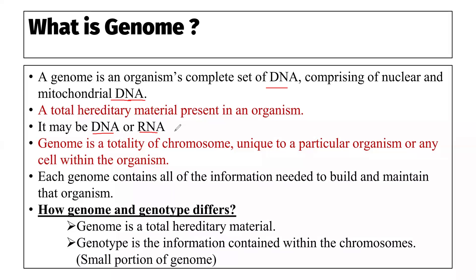The genome is also the totality of chromosomes. Different organisms have different numbers of chromosomes. For example, in human beings we have 46 chromosomes, in chimpanzees there are 48 chromosomes, and in Drosophila melanogaster we have 8 chromosomes. The summation of all these chromosomes is what we call a genome, and this number of chromosomes is unique to a particular organism.